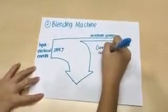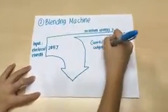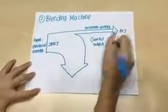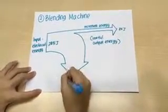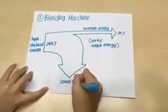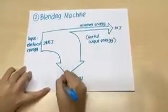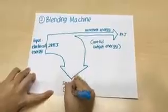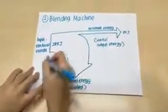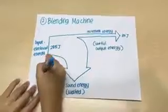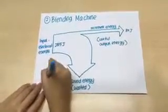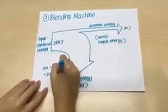This is the Sankey diagram of a blending machine. The input is electrical energy, which is 285 joules. The useful output energy is movement energy, which is 85 joules, and the wasted energy is 200 joules. J stands for joules and it is the unit of energy used in Sankey diagrams.